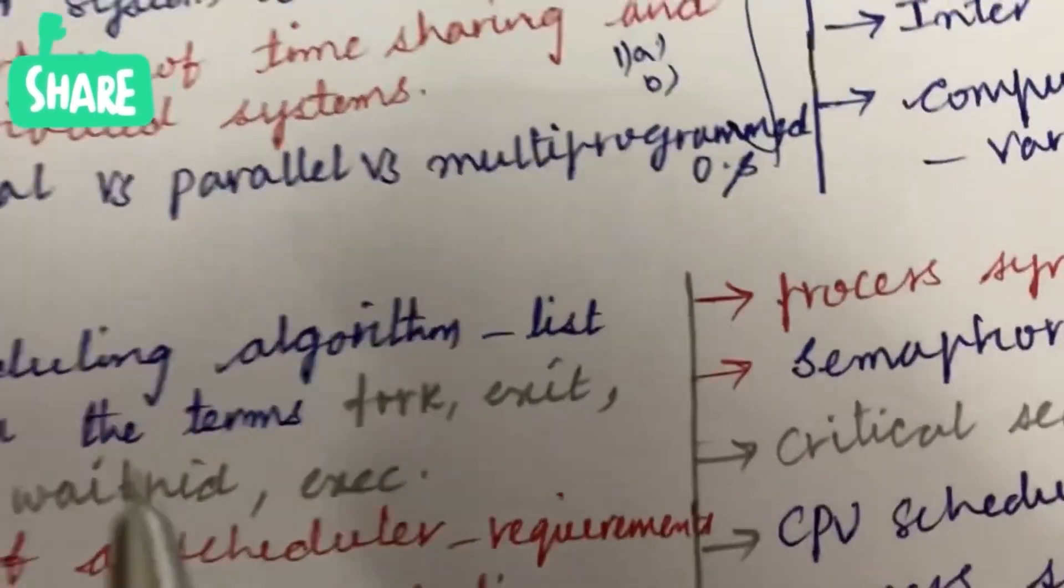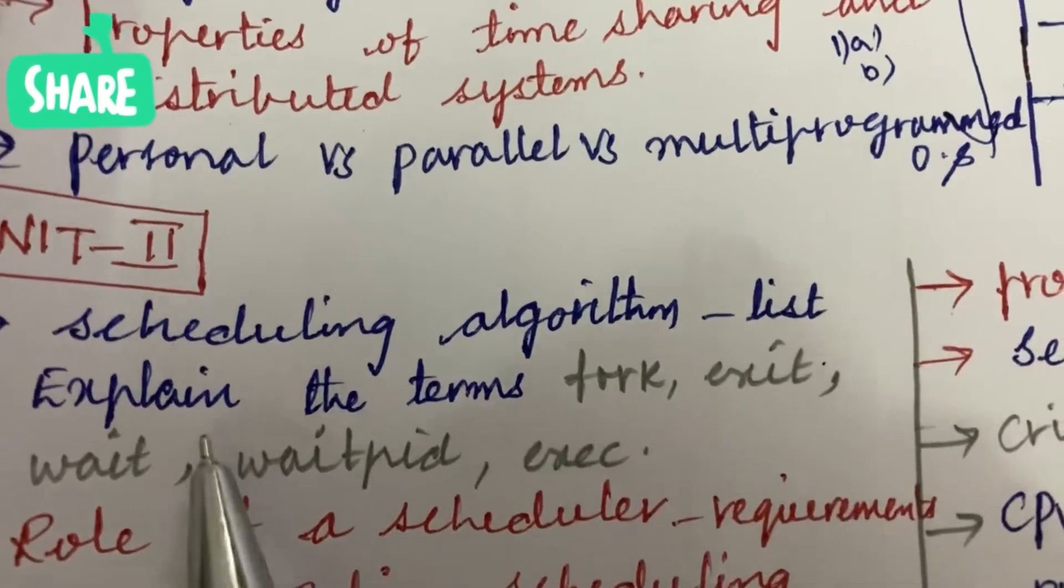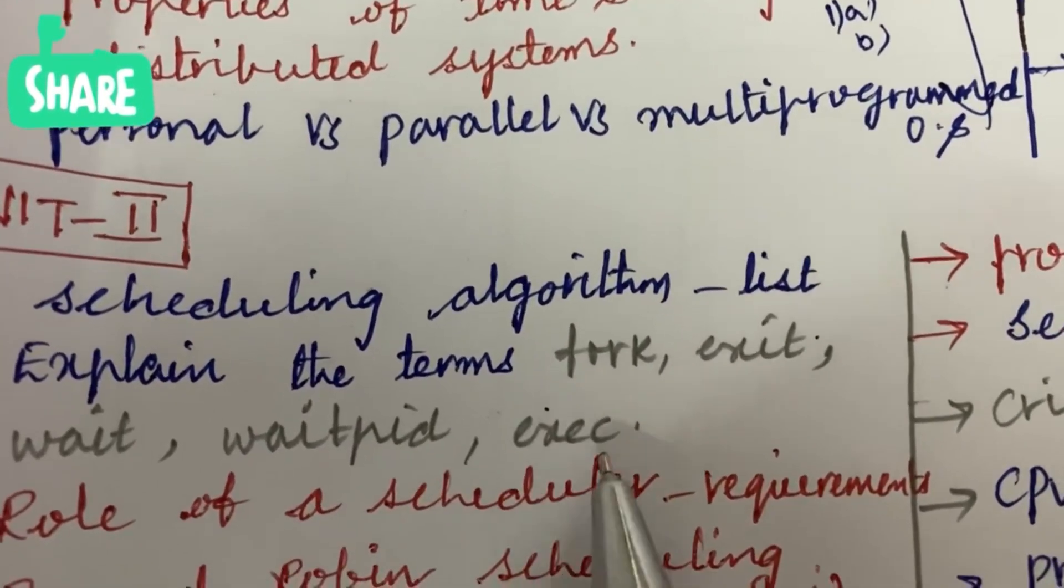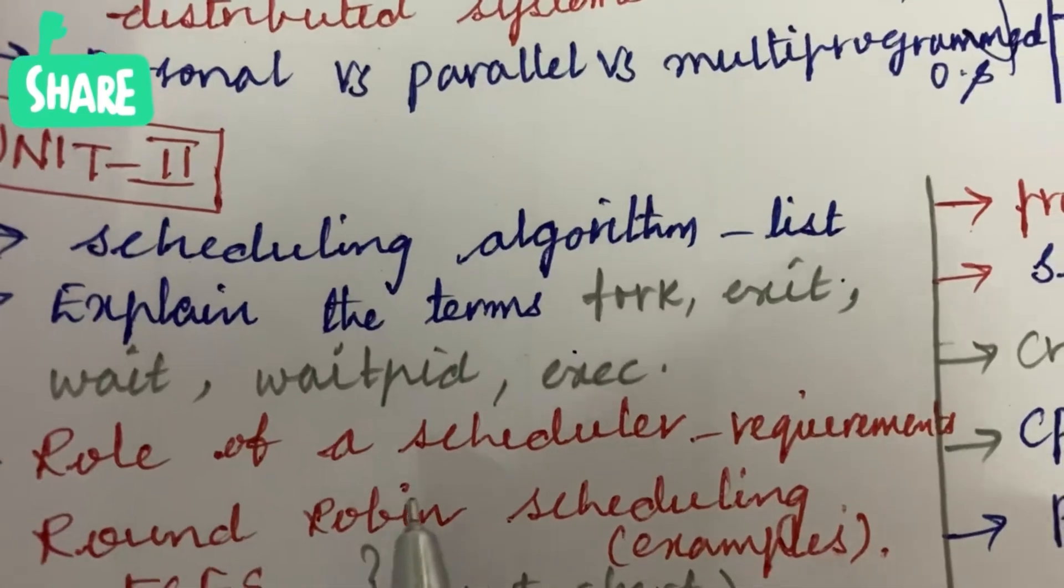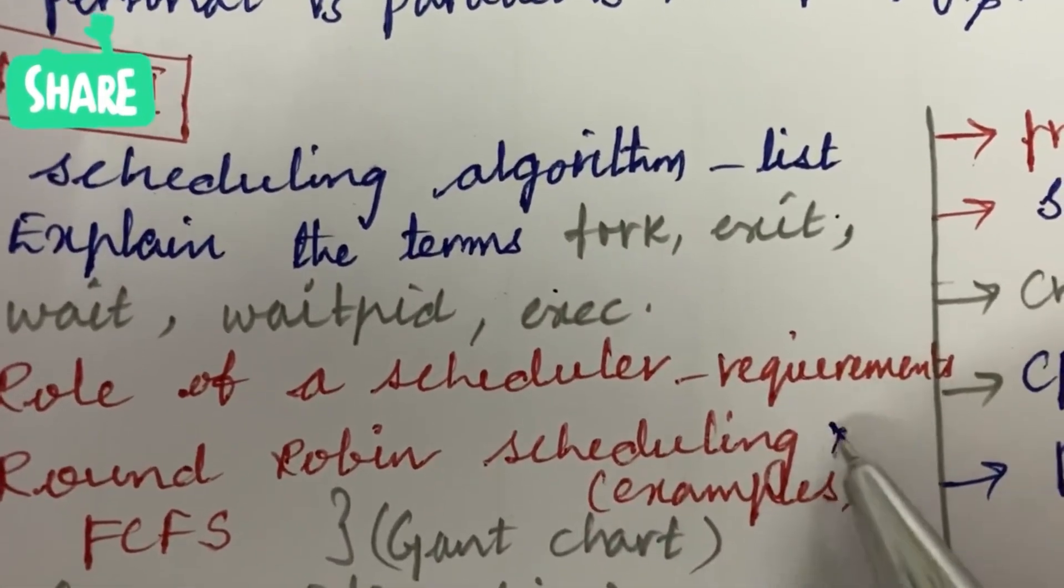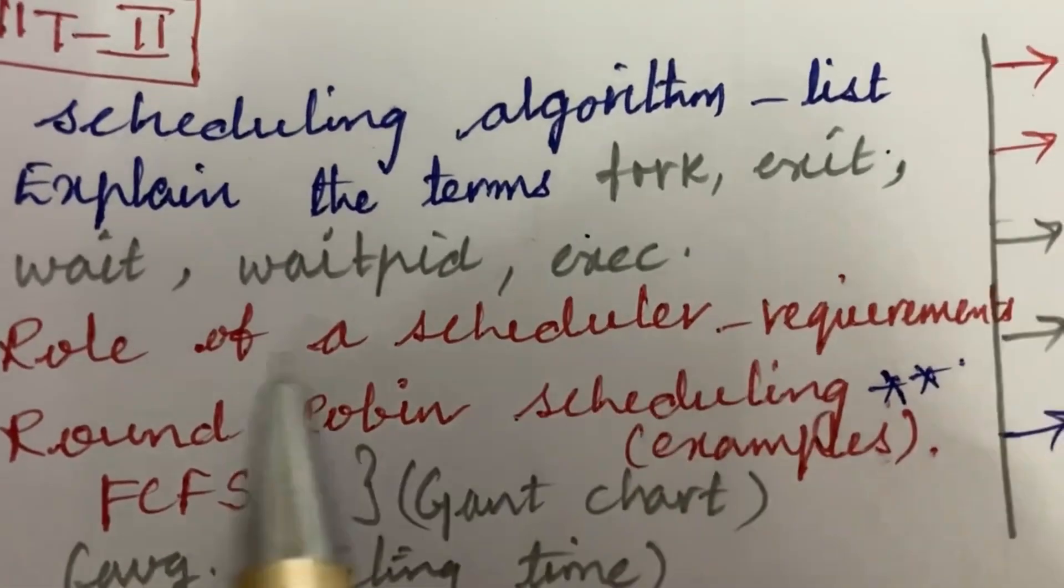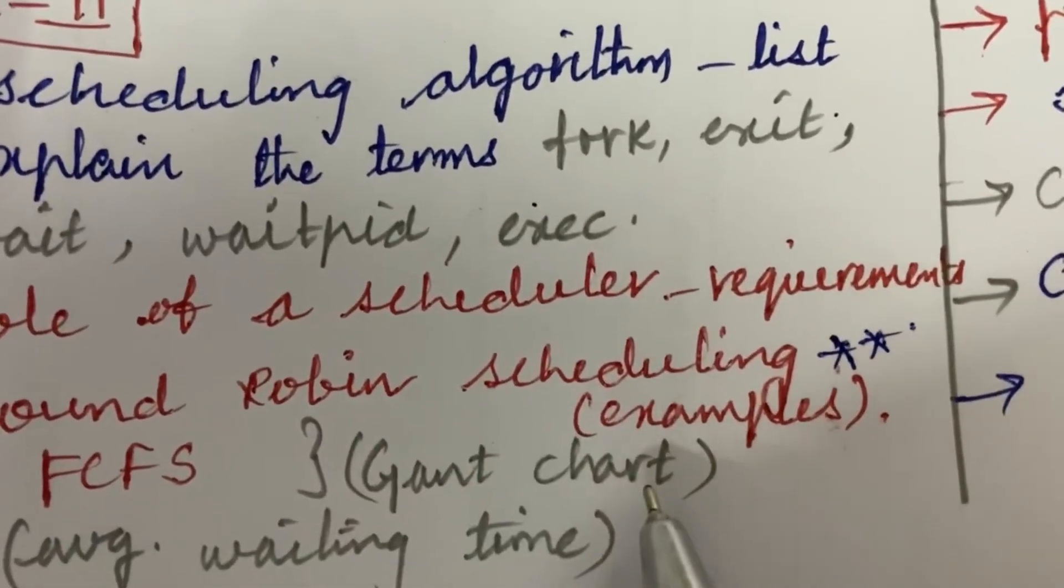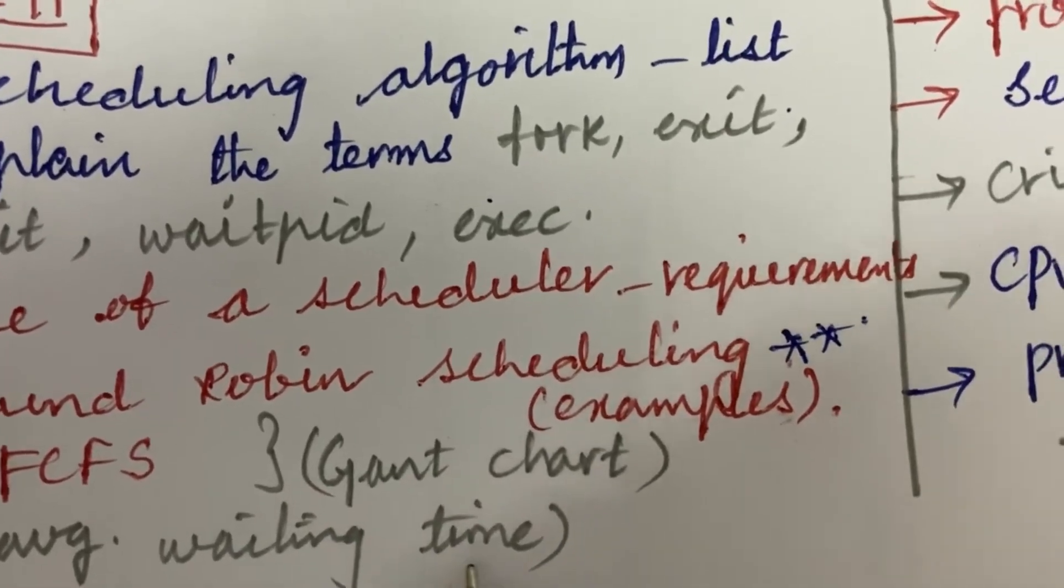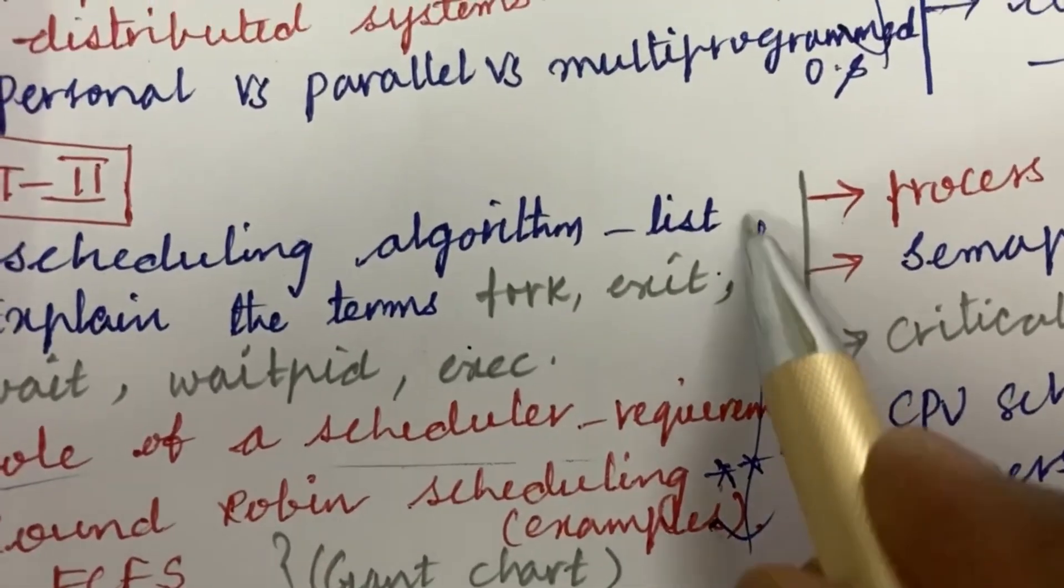Unit 2 is all about the scheduling algorithms. List and explain the terms: fork, exec, wait, wait PID, and exec. The role of scheduler and its requirements. Round robin scheduling and its algorithm along with examples and certain problems related to these concepts. For FCFS, they will be asking you to work out the Gantt chart giving you average wait time. This may be one of the gunshot questions and from this part we can expect 3a as well as 3b.